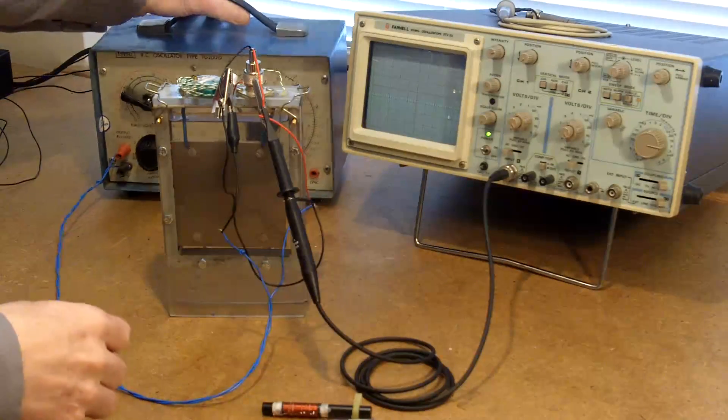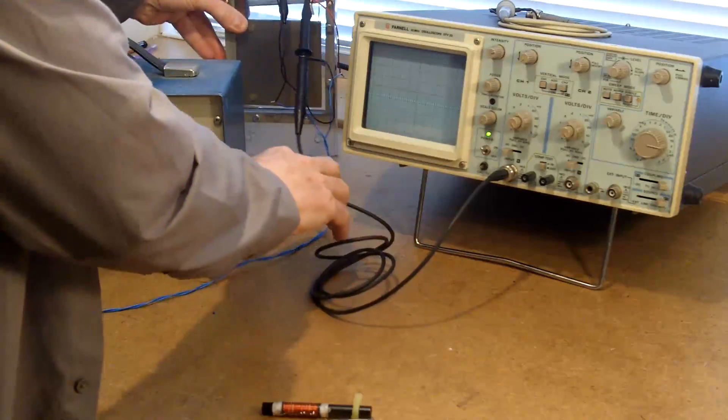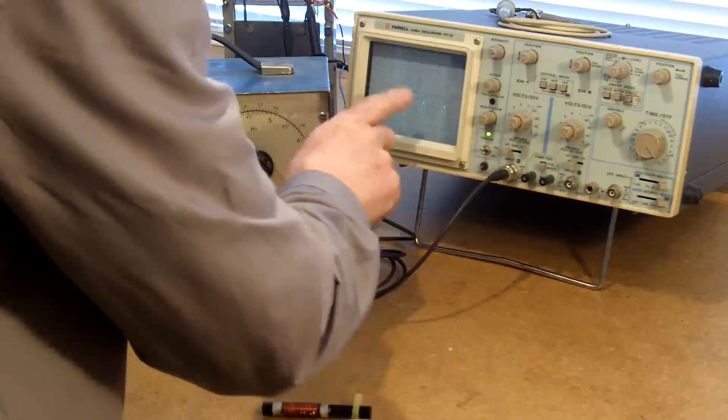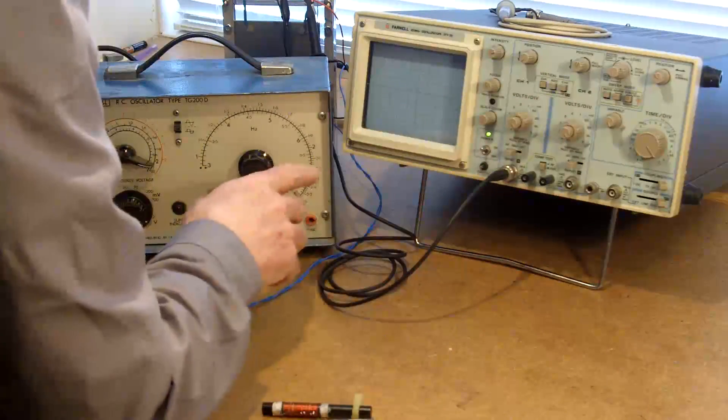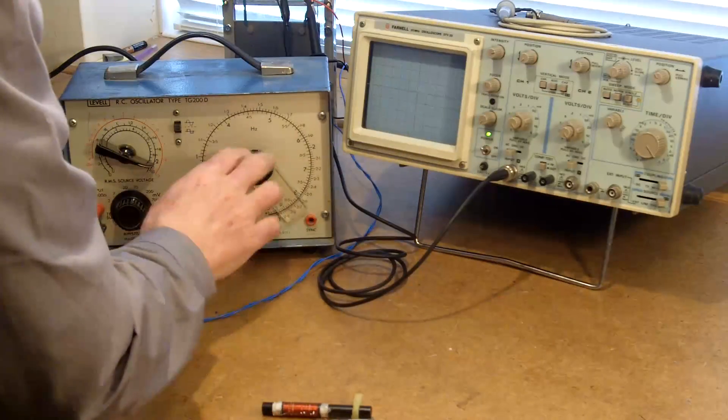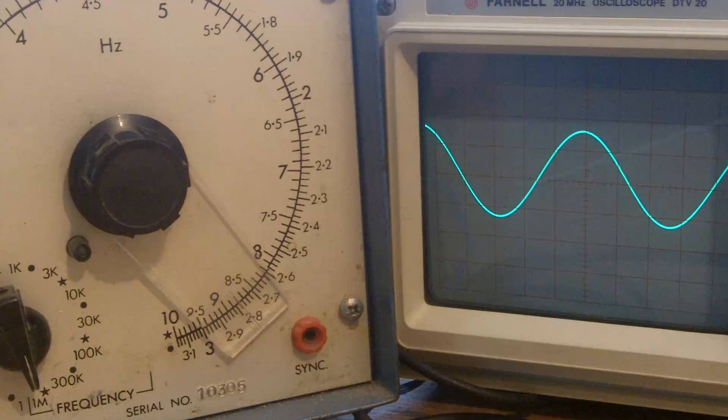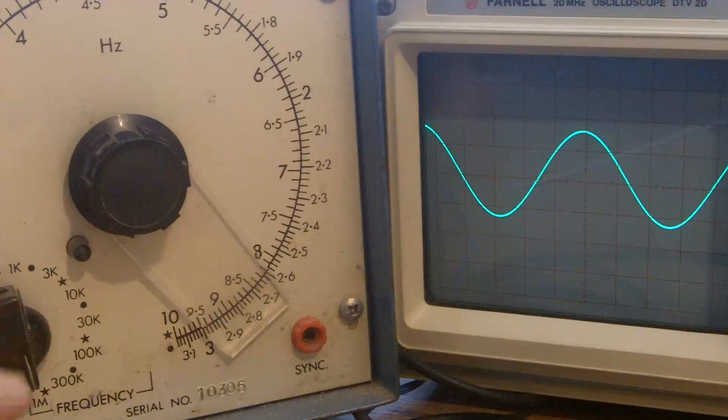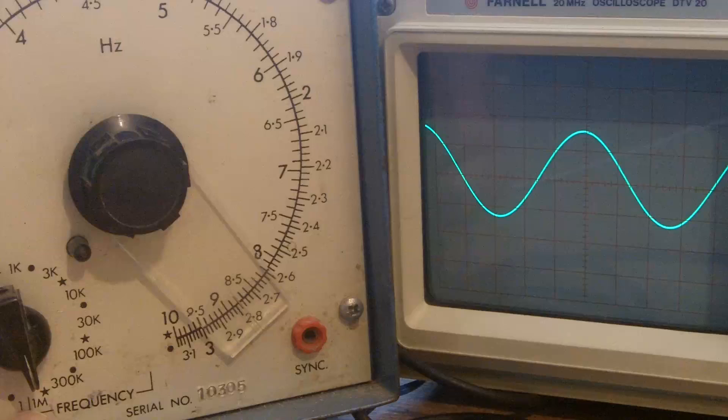What I'm going to do is reposition everything so that the cell is out of the way because we don't need to see that now. Really what I want you to be able to see is the oscilloscope and the signal generator. I've got the coil connected in parallel across the tank circuit. I've got the signal generator supplying a sine wave.